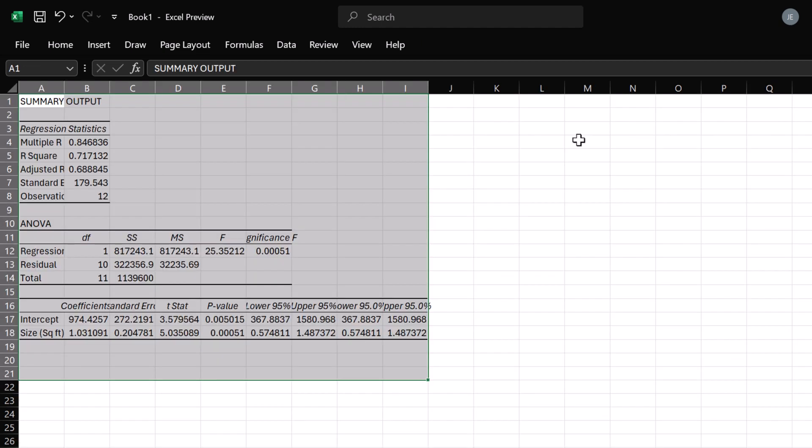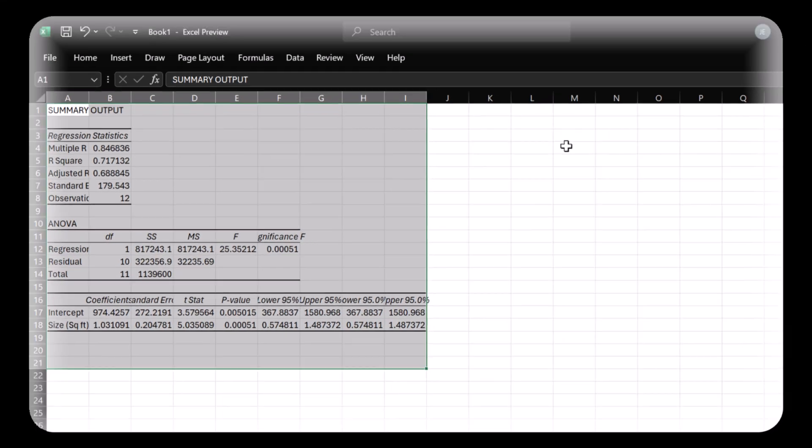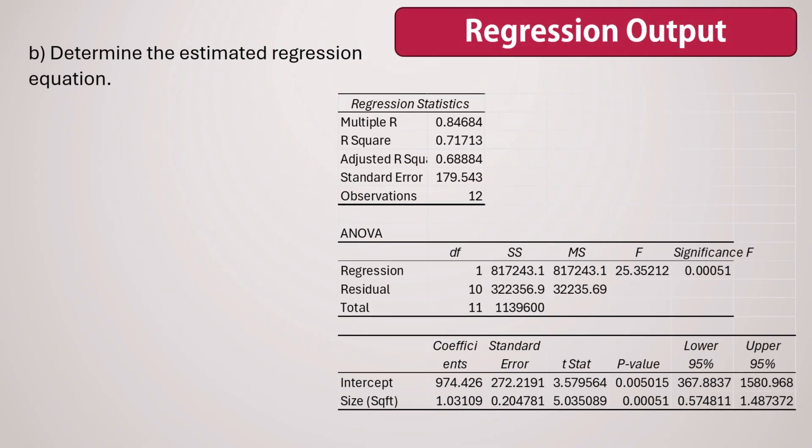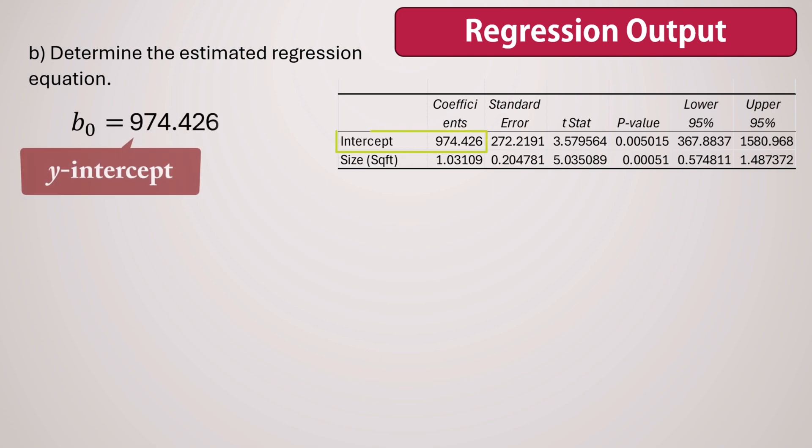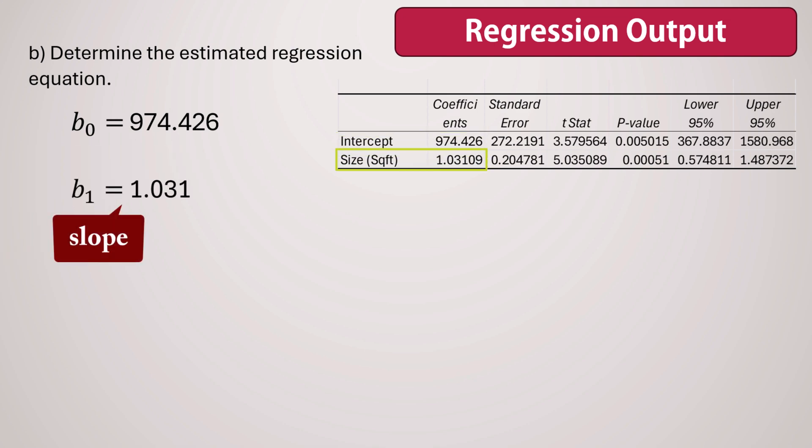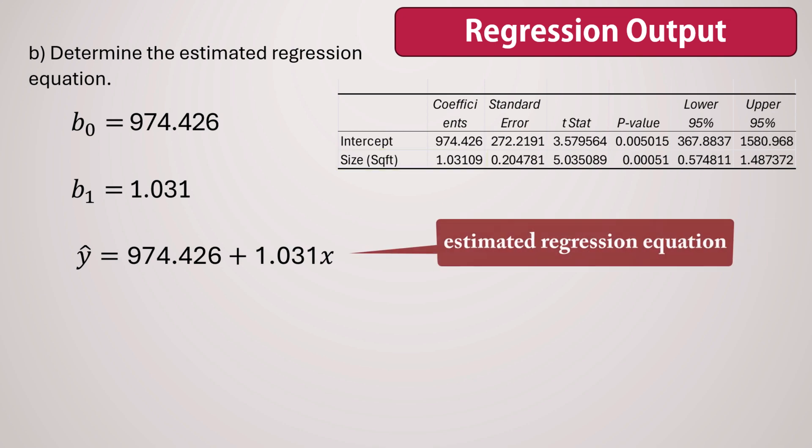And here's the Regression Summary output. Now back to our presentation. From the output, we see the Y intercept here as 974.426, denoted by B0. And the slope B1 of 1.031 is given here beside the X variable description. The estimated regression equation can thus be given as shown here.